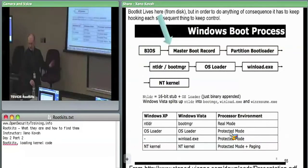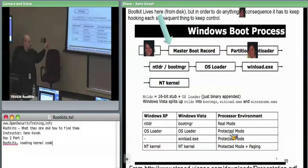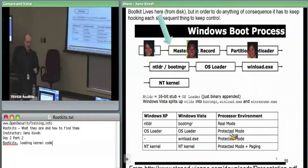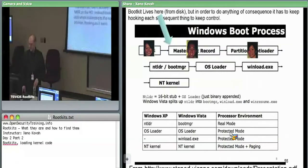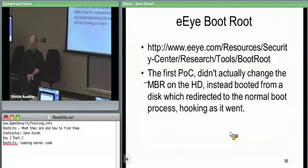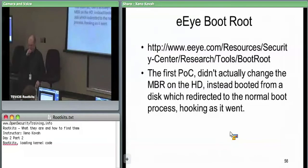That's the basic concept of a boot kit: the attacker gets in early enough in the boot stage that he can hop his way through each stage to maintain control, so he still has control by the time the kernel proper starts. The original EI boot root is still available, though it gets flagged by antivirus.